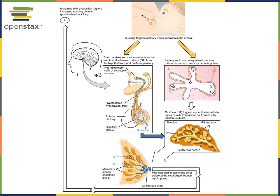As the infant continues suckling, this will stimulate more secretion of oxytocin in a positive feedback loop until the infant is satiated. When the infant is full and stops suckling, the stimulus is removed, ending the positive feedback mechanism for the release of oxytocin.